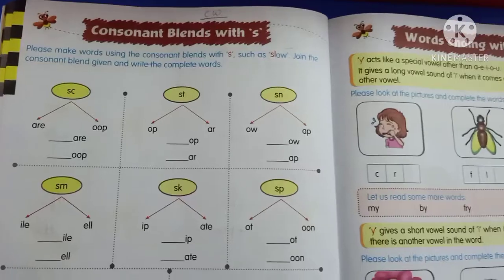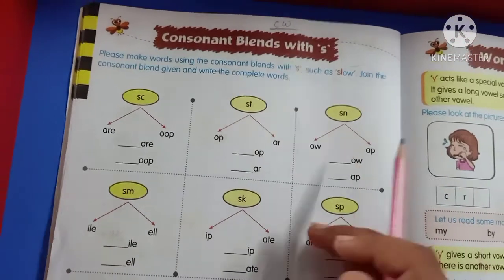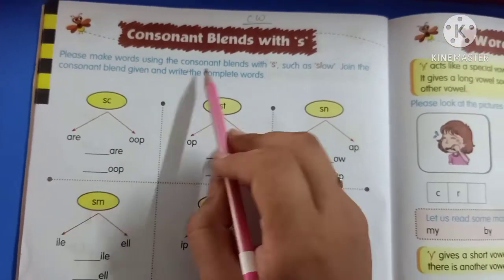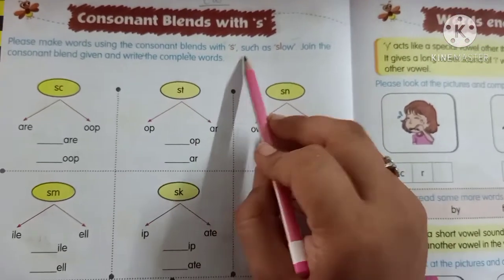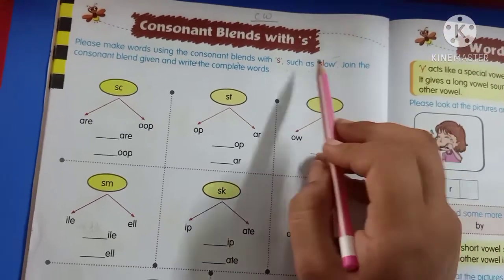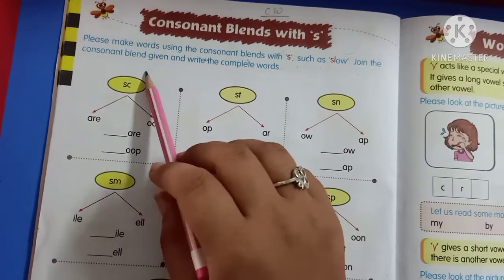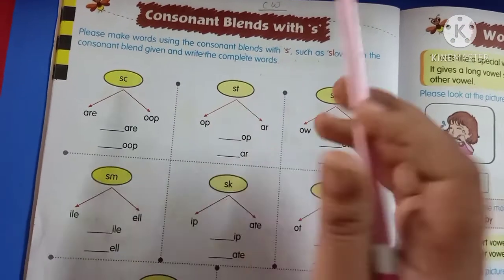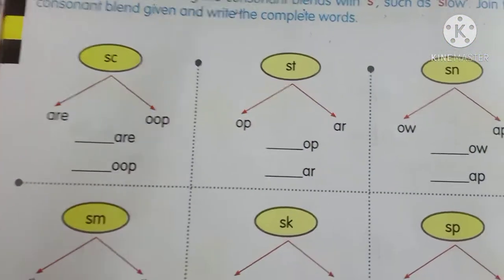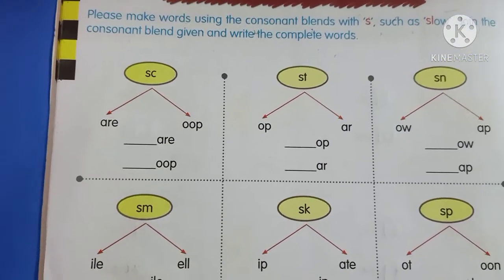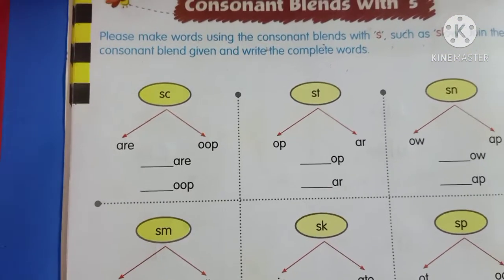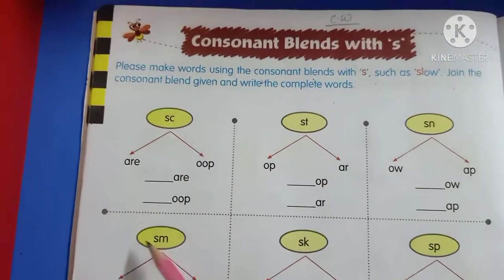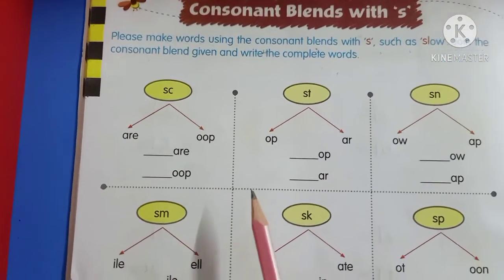In our previous video we did consonant blends with R and L. But today we will do S. Please make words using the consonant blends with S, such as 'slow.' Join the consonant blends given and write the complete words. We have been given consonant blends here — join them and complete the words, like 'slow.' Okay?